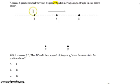Which observer, observer 1, 2, 3, or 4, could hear a sound of frequency f when the source is in the position shown?